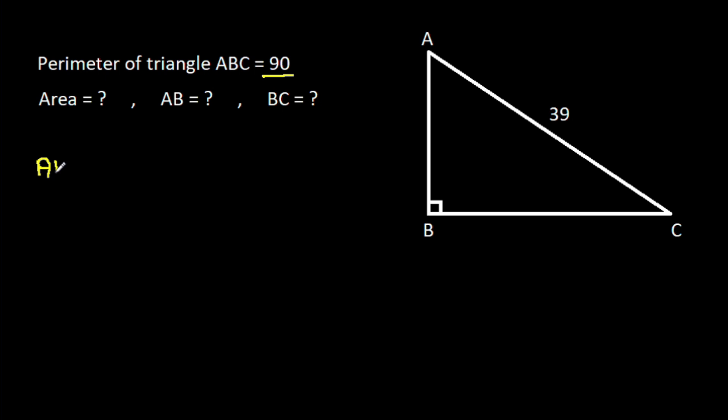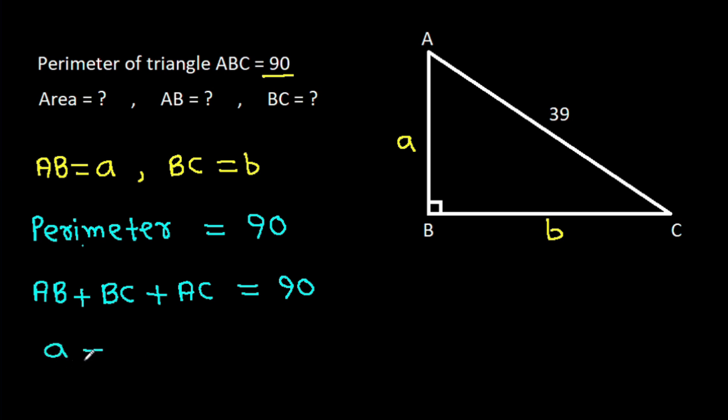So suppose AB is a and BC is b. We have perimeter is 90, and perimeter is AB plus BC plus AC equals 90. So a plus b plus 39 equals 90.